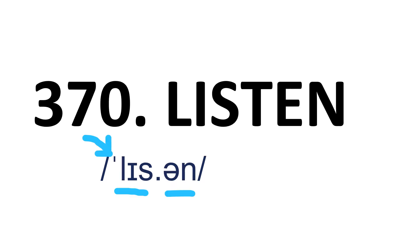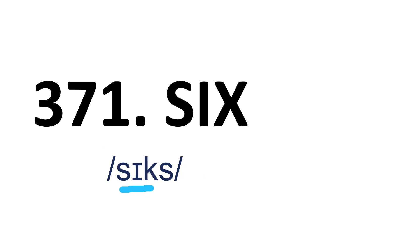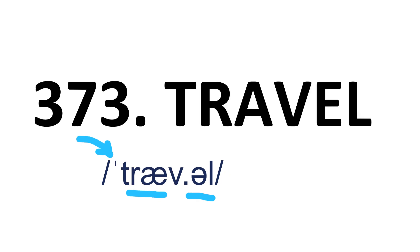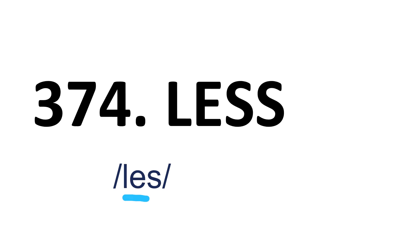Listen — it's a two-syllable word and stress is on the first syllable. Listen. Six — it's a one-syllable word. Six. Table — it's a two-syllable word and stress is on the first syllable. Table. Travel — it's a two-syllable word and stress is on the first syllable. Travel. Less — it's a one-syllable word. Less.